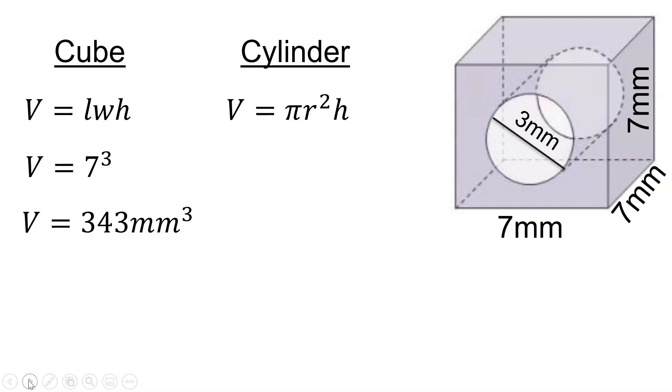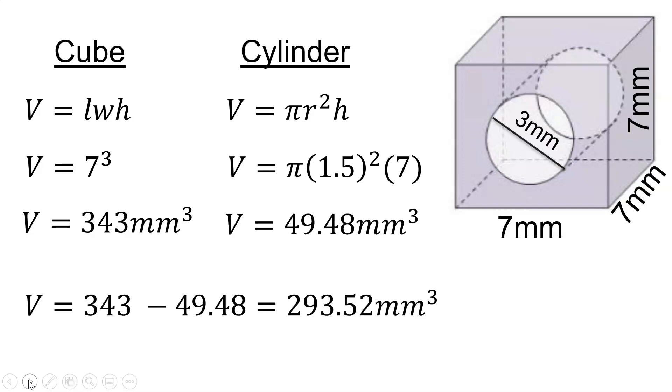The volume of the cylinder in the cube is found with the formula pi r squared h. By substituting the values into the formula we find the volume of the cylinder, and then when we subtract the two volumes we find the volume of the toy piece. The only problem is that the volume is in millimeters cubed, not meters cubed.